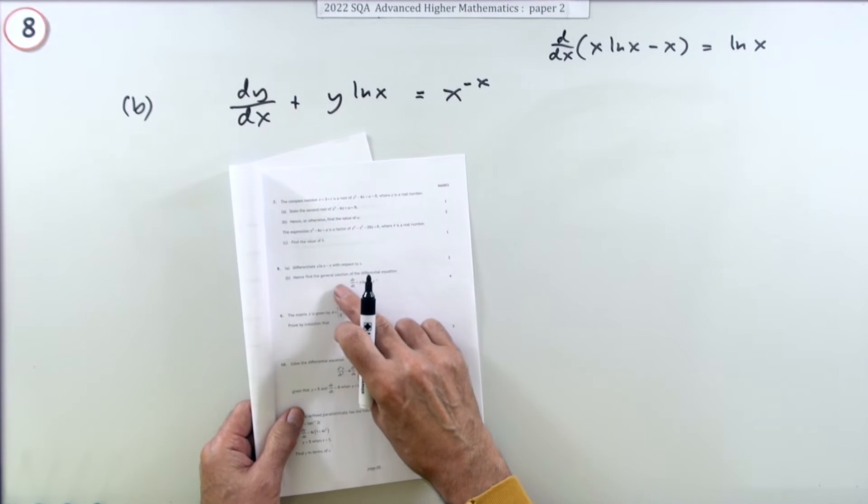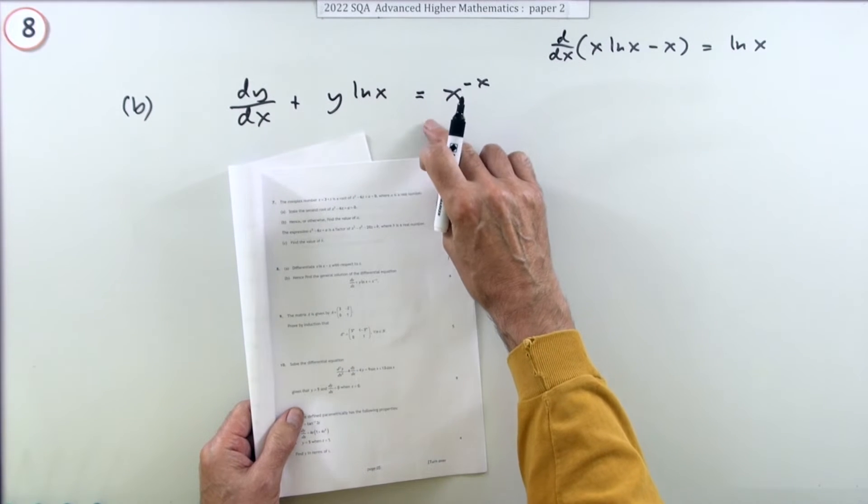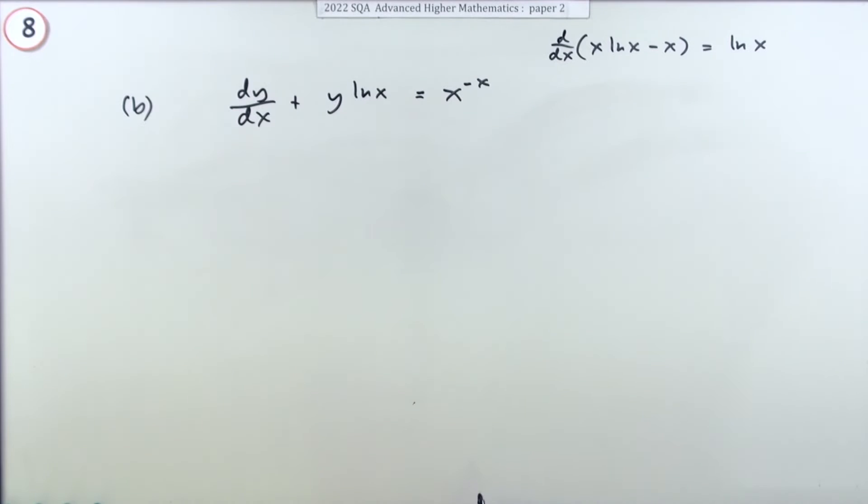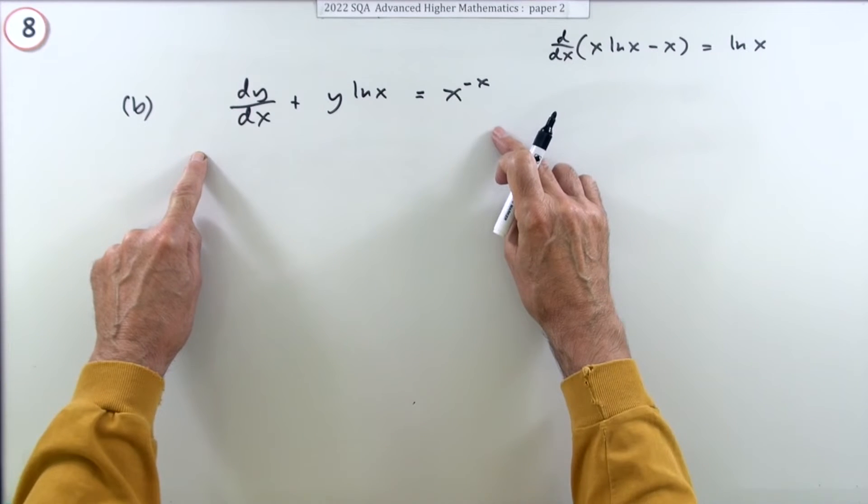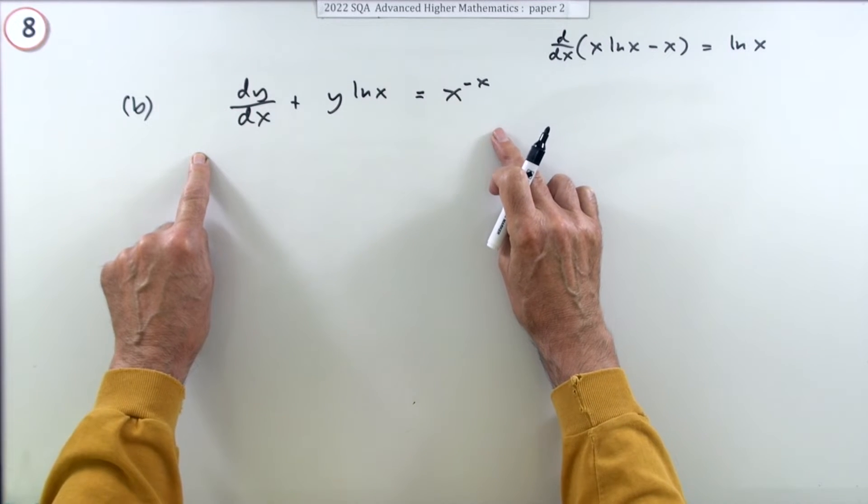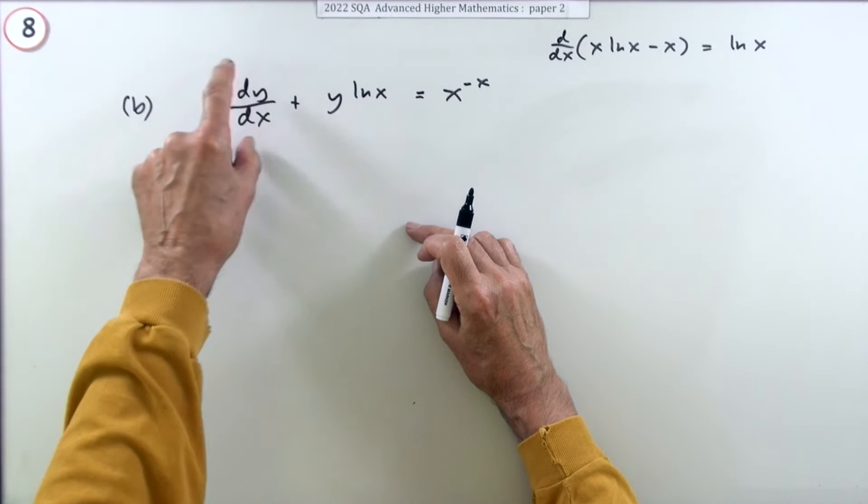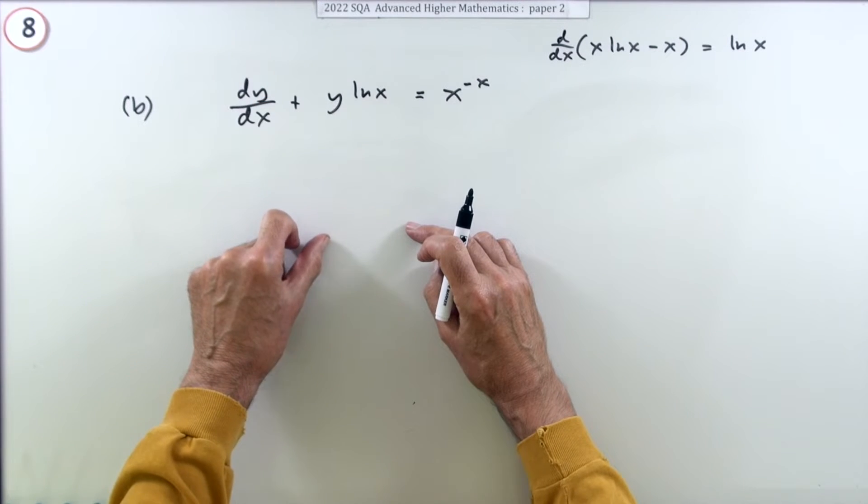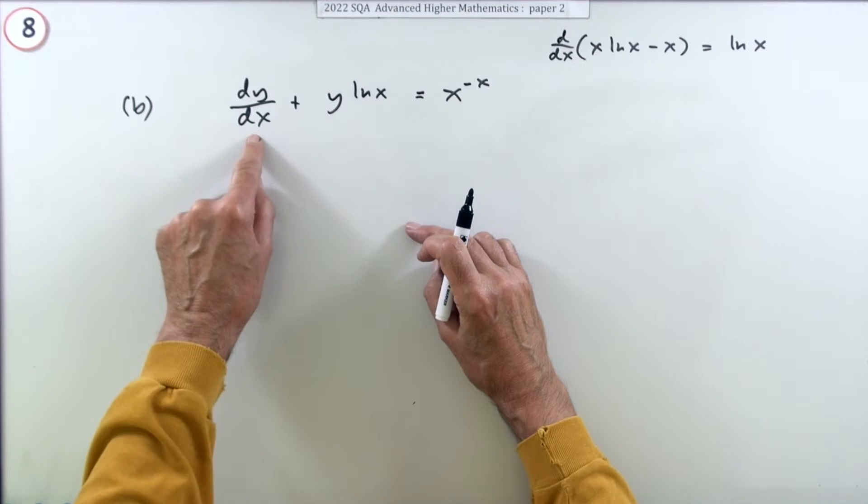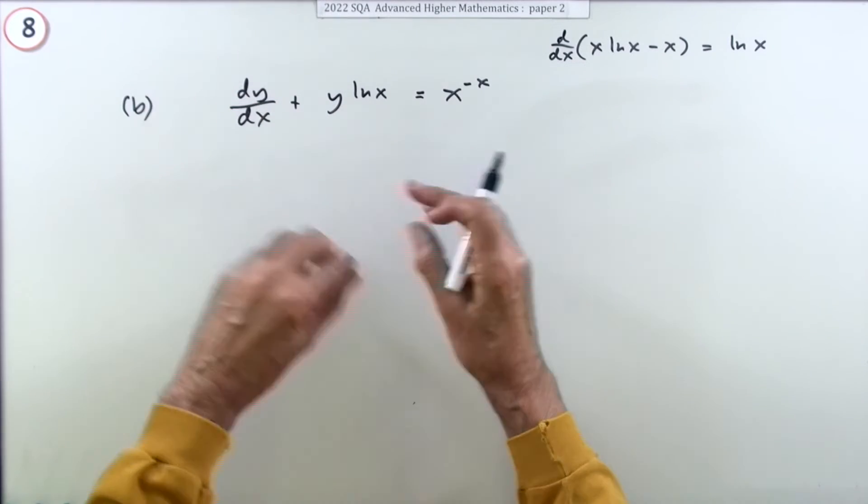So part b then. Hence find the general solution of this differential equation for four marks. Well this is a first-order linear differential equation. First order because the highest derivative is just power one, it's just the first derivative. And linear because y and its derivatives only appear as themselves, no squares or roots or other functions of y.